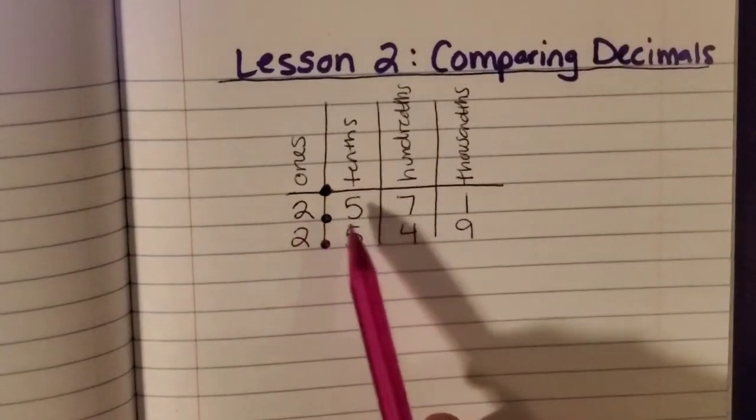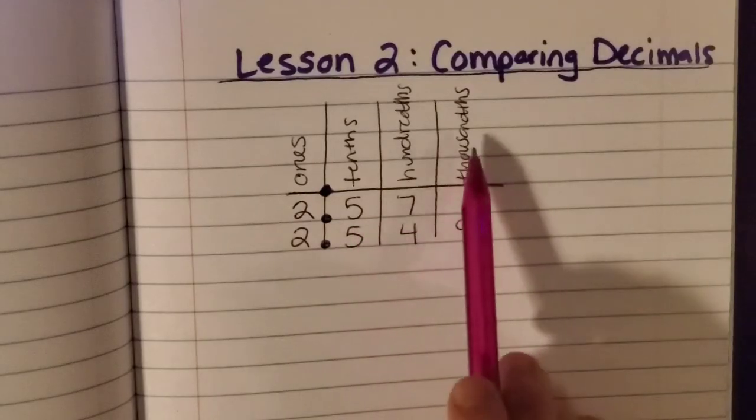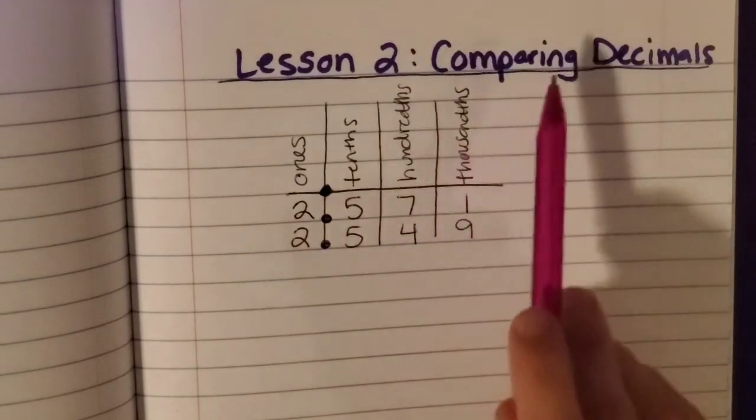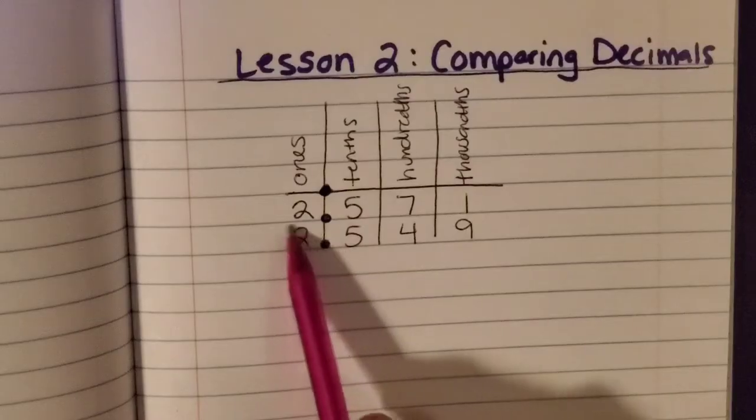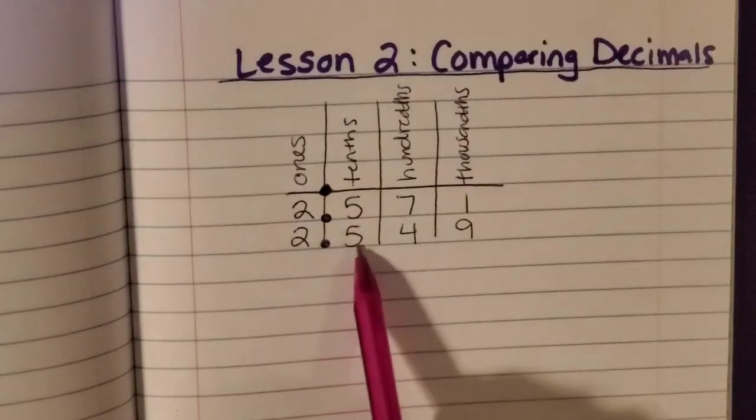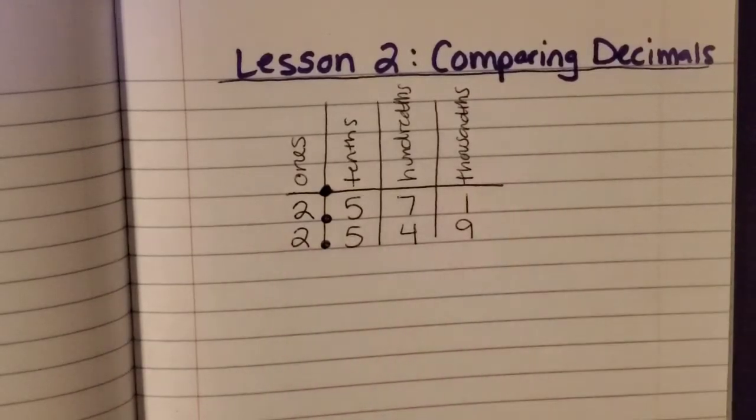So two and 571 thousandths, and I want to compare it to two and 549 thousandths.